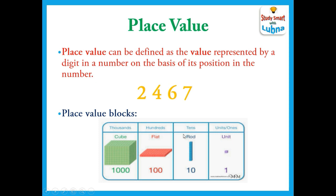These are represented by different blocks. In units and ones we have one small block. In tens we have a rod made of ten small blocks. In hundreds we have a flat or one hundred small blocks. And in thousands, it looks like a thousand small blocks and is represented by a cube. So this is called ones, tens, hundreds, and thousands. Every four digit number has these place values.